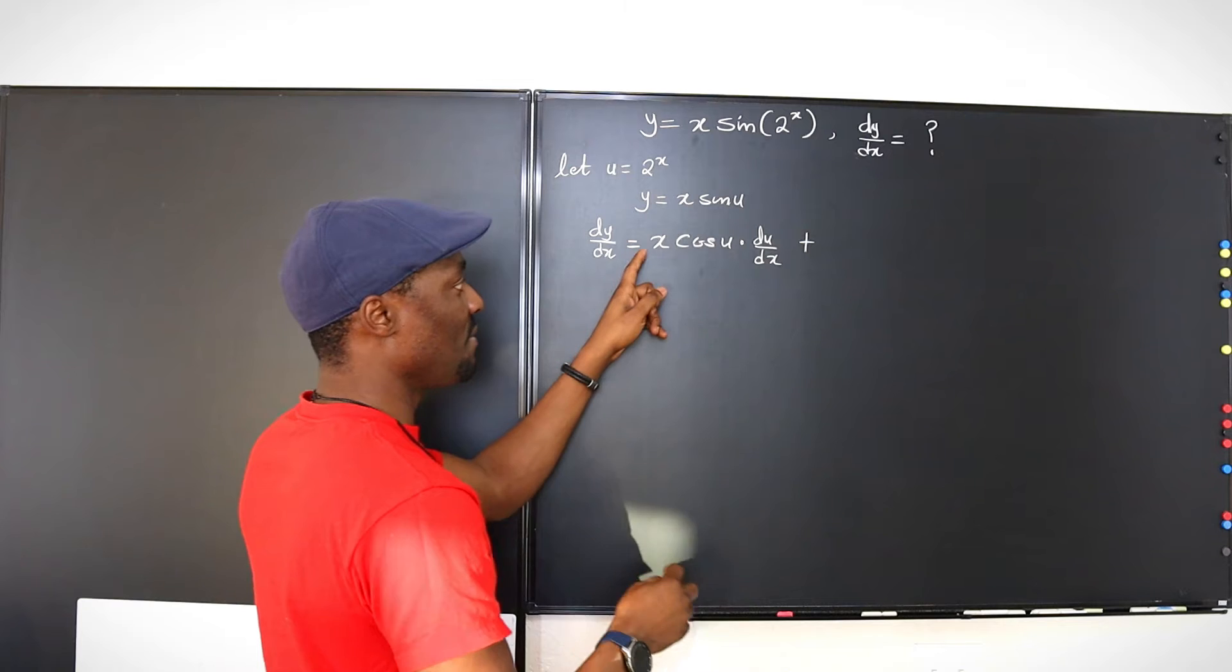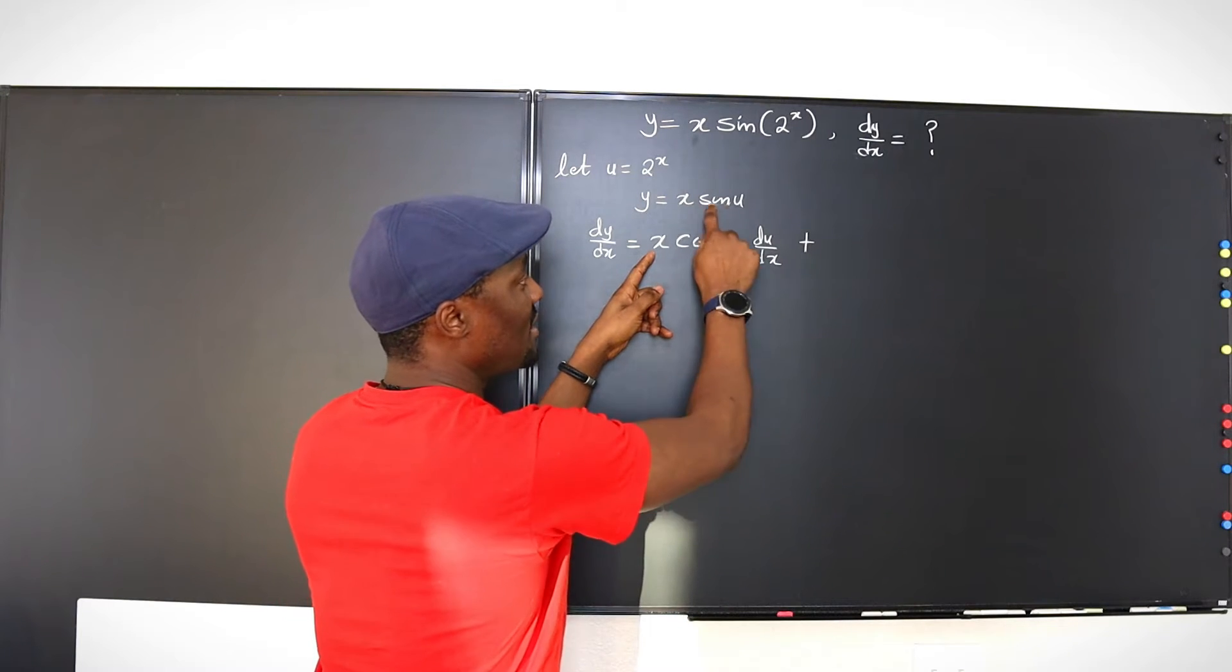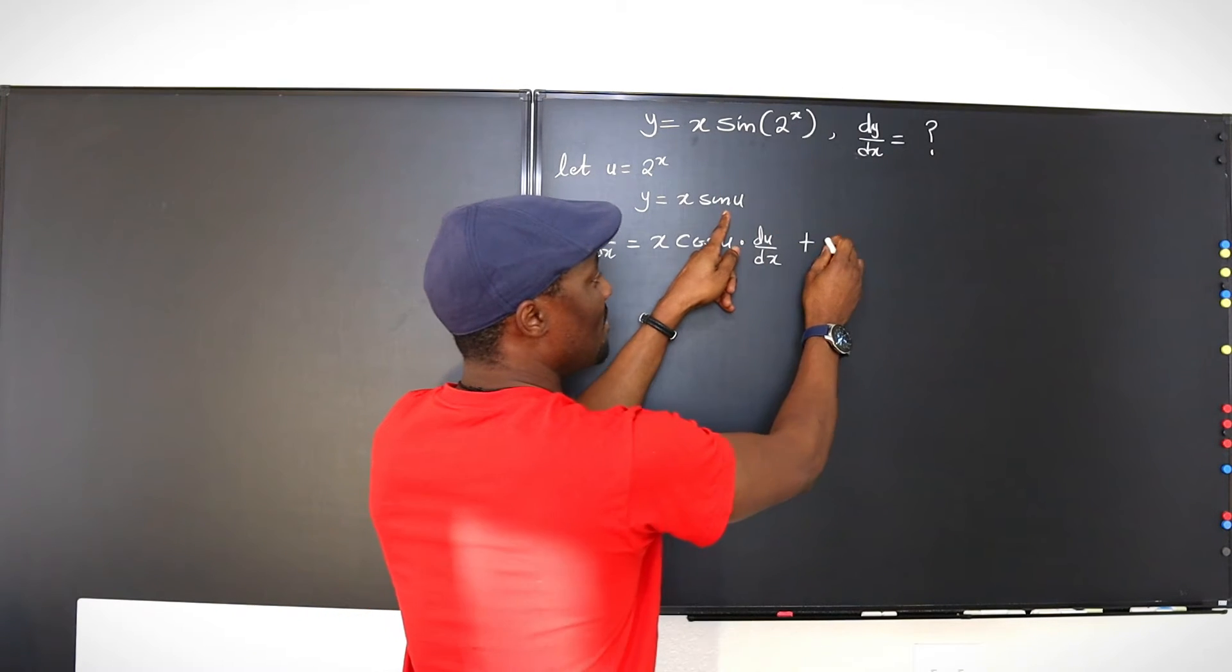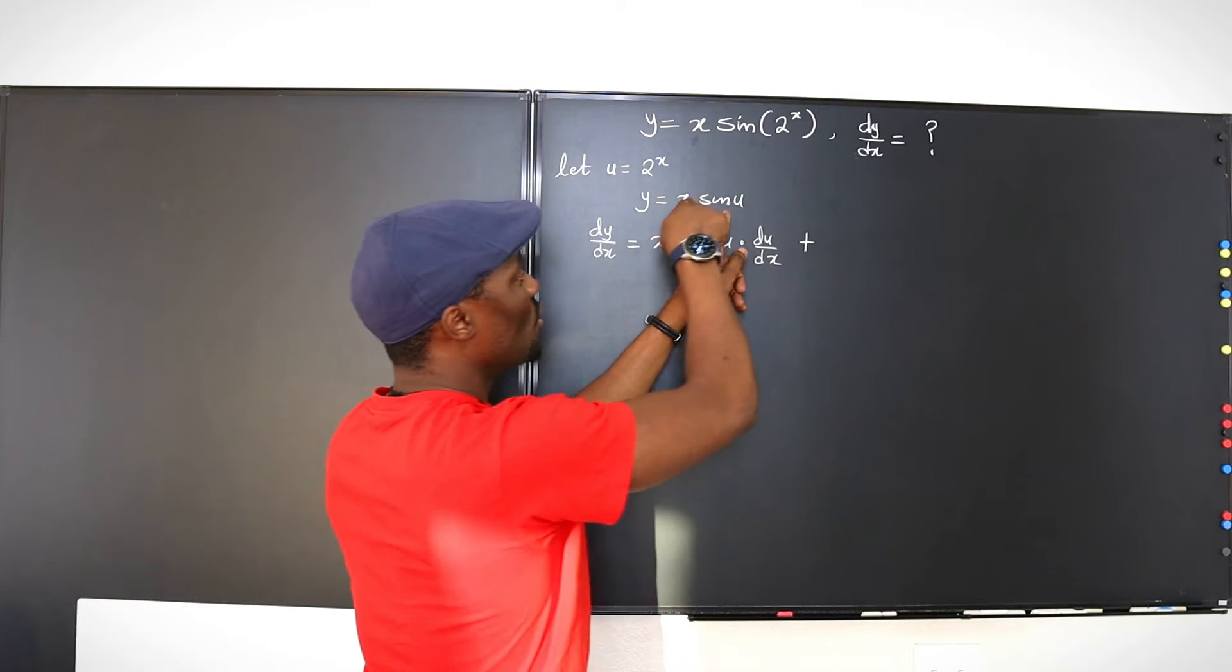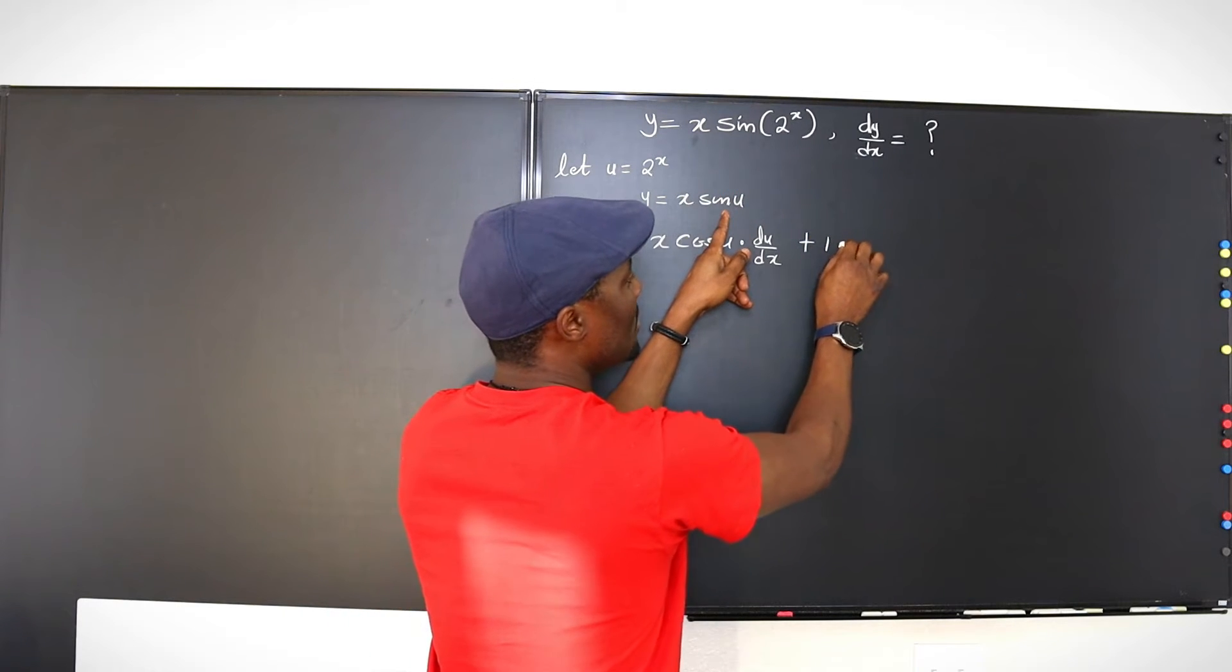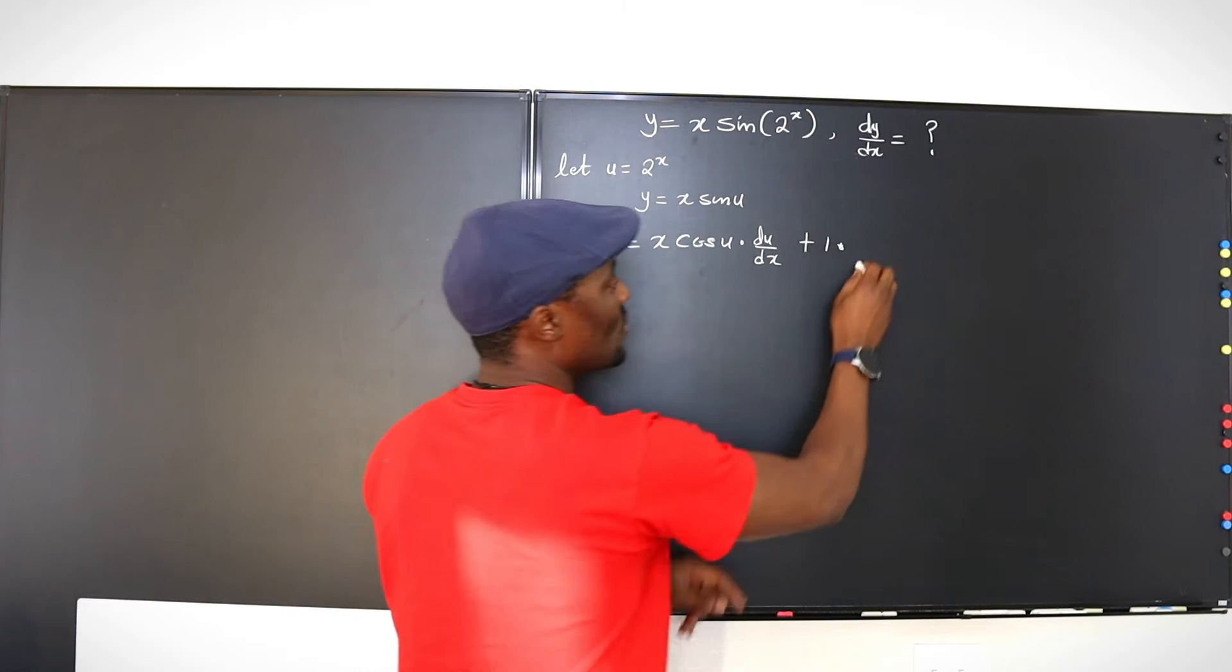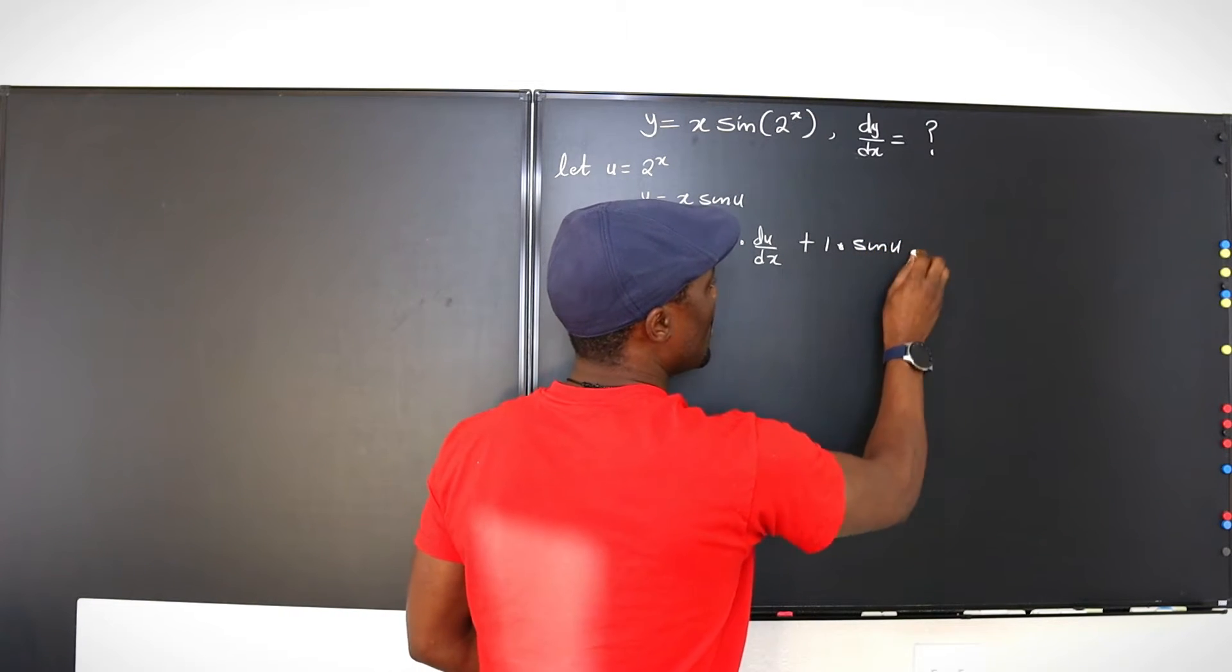remember the product rule, keep the first, differentiate the second, then differentiate the first and keep the second. So if we differentiate x, we're going to get 1 multiplied by, keep the second, we're going to get sine u.